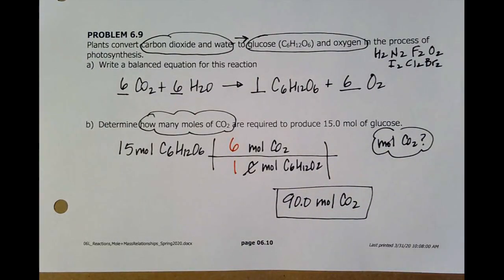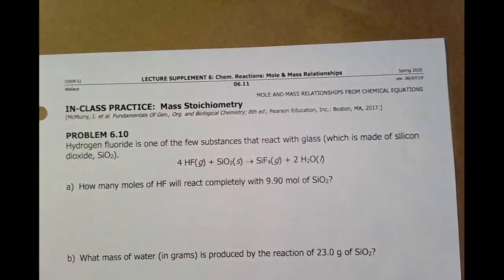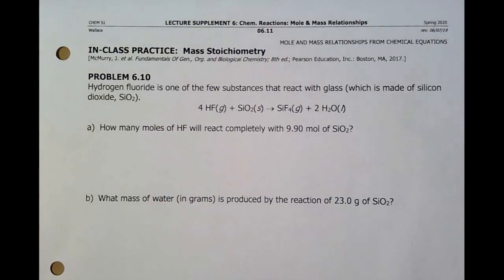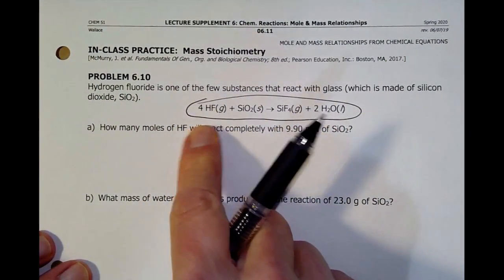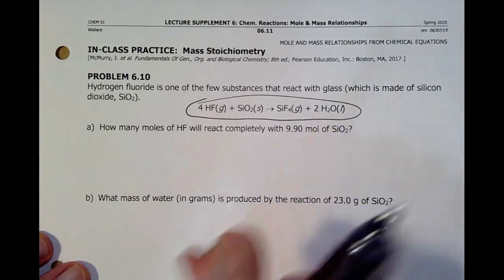Now, we're not really doing anything differently than we did in chapter one. I'm just looking for ratios. Set them up so the right things cancel and the right things are left. And that's it. I took a page 6.11. A little more interesting, of course, a little more complicated. I've been given my recipe already. Four moles of HF reacts with one mole of SiO2 to give me one mole of silicon tetrafluoride and two moles of water.